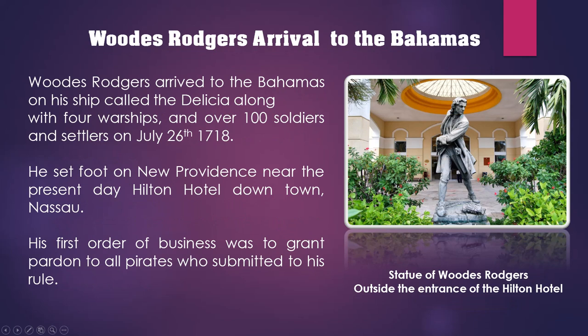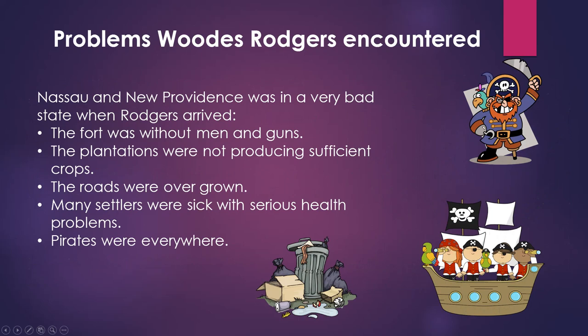His first order of business was to grant pardon to all pirates who submitted to his rule. It wasn't quite easy for Rogers at first because Nassau and New Providence was in a very bad state when he arrived.